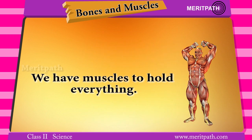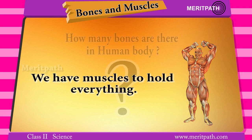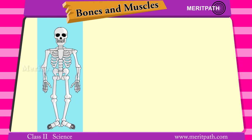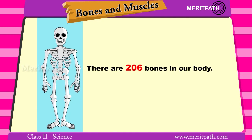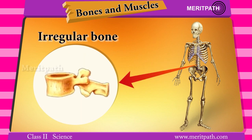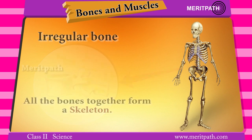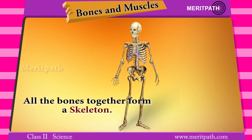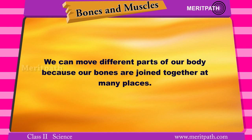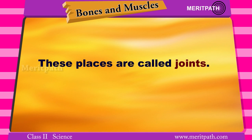We have bones and muscles which hold everything together. So how many bones are there in a human body? There are 206 bones in the human body. Some bones are long, some are short, some are flat, and some are irregular. All the bones together form a skeleton. Bones are joined together at many places, and these places are called joints.